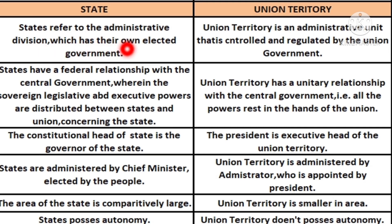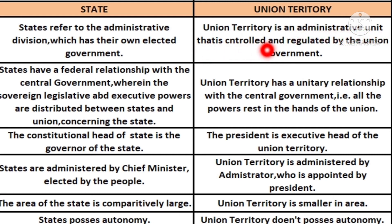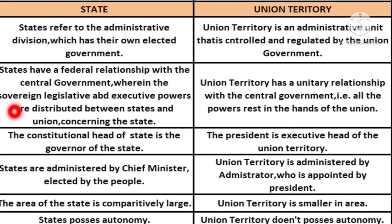Now, what are the differences between union territories and states? States refer to administrative divisions which have their own elected government. Union territories are administrative units that are controlled and regulated by the union government.